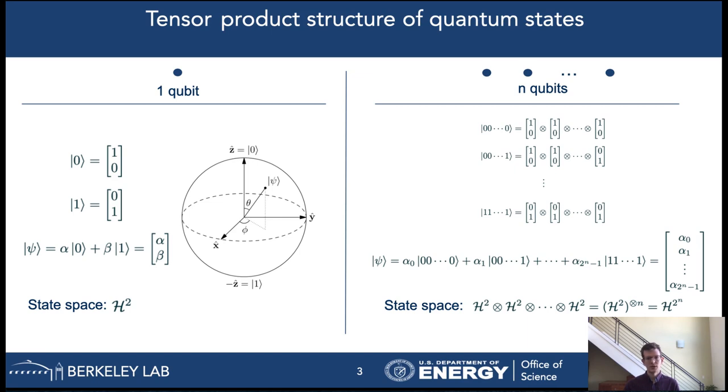Similar to the one qubit case, the state of an n qubit system can be in a superposition of many or all basis states. An additional feature of an n qubit state is that it can be an entangled state, which means that the state of the quantum system can't be fully described by the states of the individual qubits, but we have to consider them as a whole. Now that we understand some properties of state spaces of qubits, we need to know how we can manipulate the state of a qubit system in order to perform a computation with the qubits.